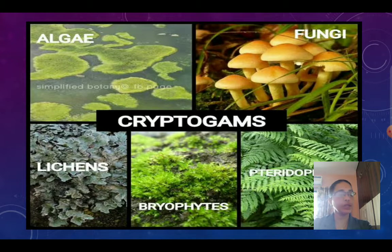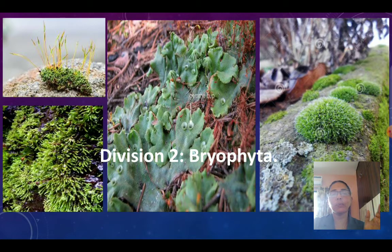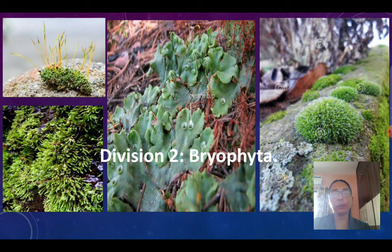Now we are going to study the second division of cryptogames, that is bryophytes or bryophyta. In this division you will find all types of moss. Moss grows where there is moisture — on the bark of trees, on walls, or on the grass. These are moisture-loving and shade-loving plants. We call bryophyta the amphibians of the plant kingdom because during reproduction they require water and large amounts of moisture.